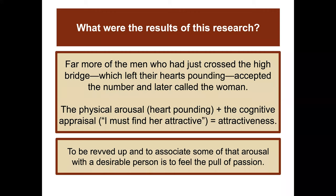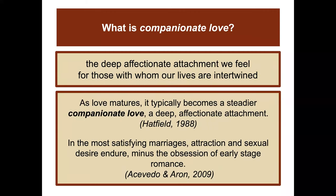Companionate love is the deep affectionate attachment we feel for those with whom our lives are intertwined. As love matures, it typically becomes a steadier companionate love — a deep affectionate attachment. In the most satisfying marriages, attraction and sexual desire endure, minus the obsession of early-stage romance.